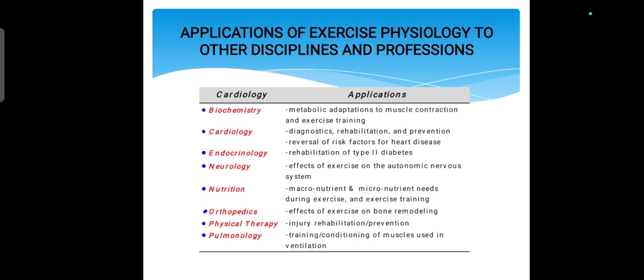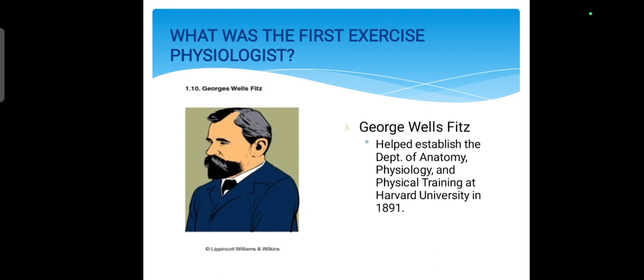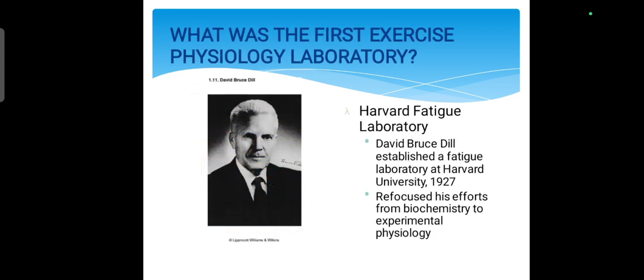The application of exercise physiology now extends to many fields: biochemistry, cardiology, endocrinology, neurology, nutrition, orthopedics, physical therapy, and pulmonology. In biochemistry we study metabolic adaptation, muscle contraction, and exercise training. In cardiology it is used in cardiac rehab and preventive care. In neurology it applies to the autonomic nervous system and brain. In nutrition, we study macronutrients, micronutrients, and exercise training. The first exercise physiology laboratory was established by George Wells Fitz at Harvard in 1927.